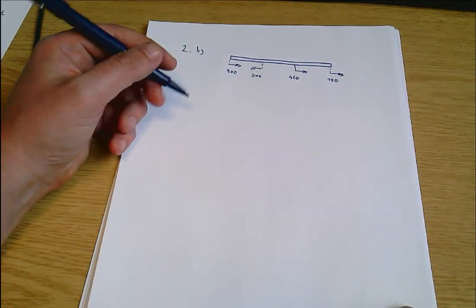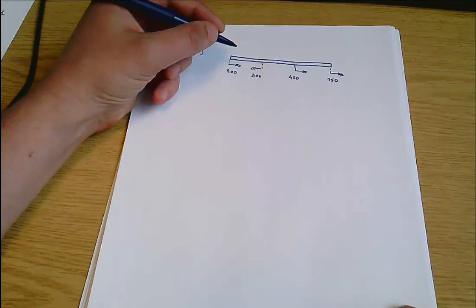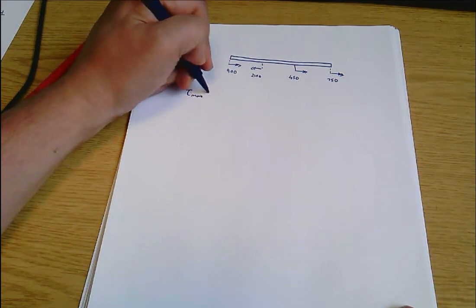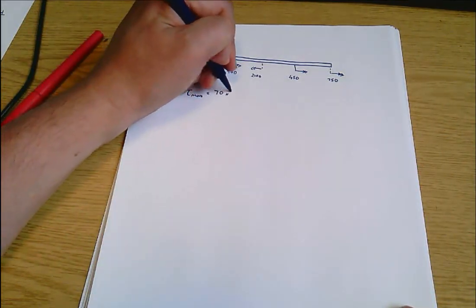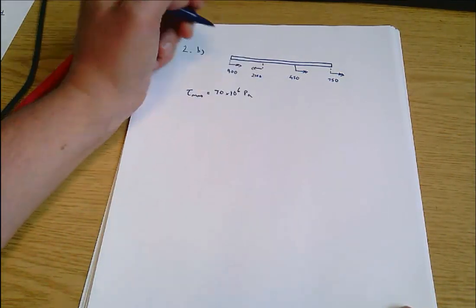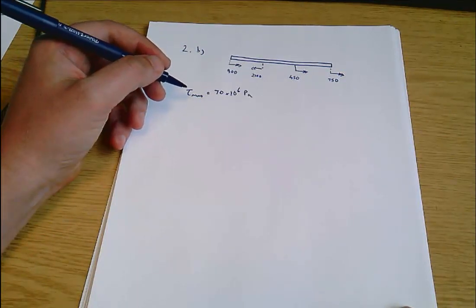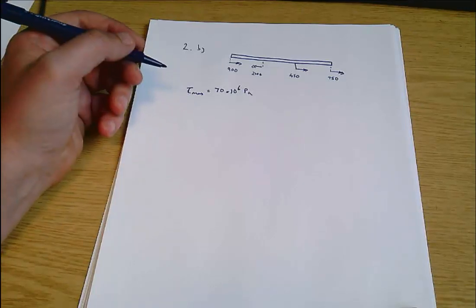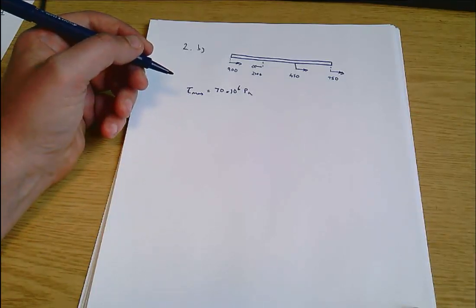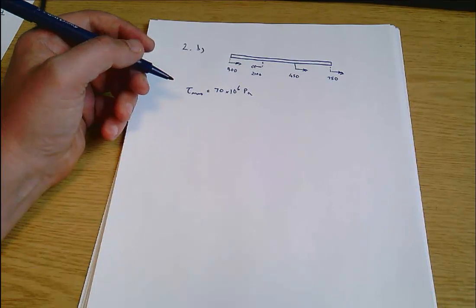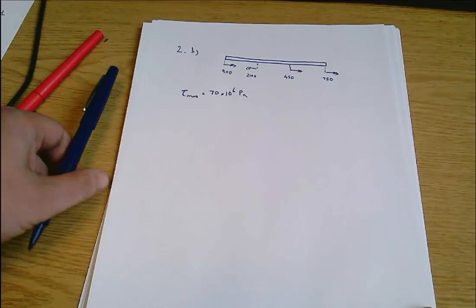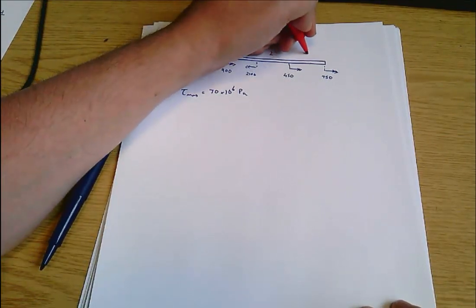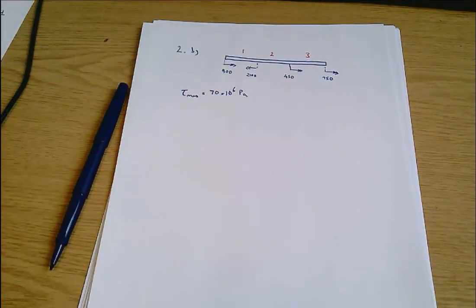We're told that the maximum allowable torsional shear stress is 70 megapascals, tau max equals 70 times 10 to the 6 pascals, and we're asked for the required diameter. What we're going to need to find here is the maximum torque within the shaft, and to do that we're going to need to do some method of sections. I'll think about section one, section two, and section three of the shaft.